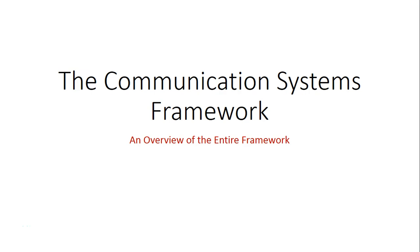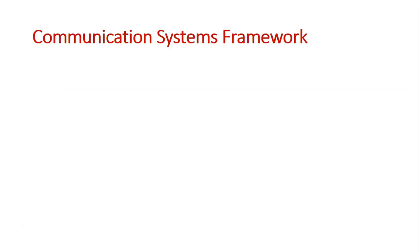To begin this unit we're going to take a look at the communication systems framework, which is basically a diagram that reflects the different stages of a message being sent throughout a communication system. In this framework there are multiple levels, and at each level different things are happening.